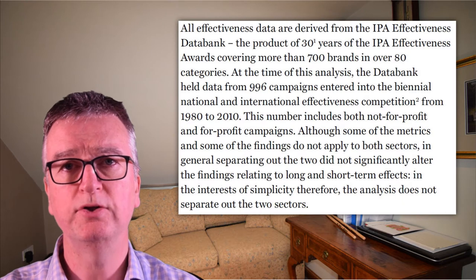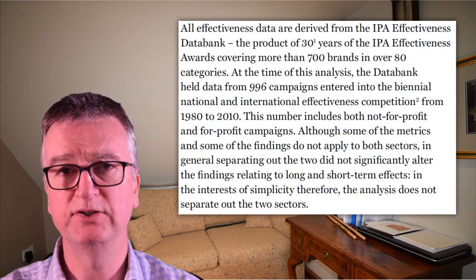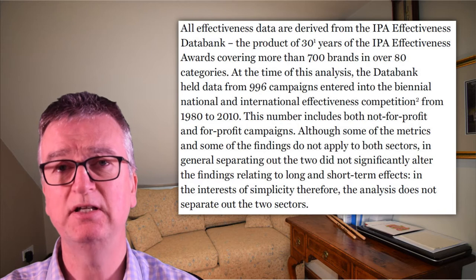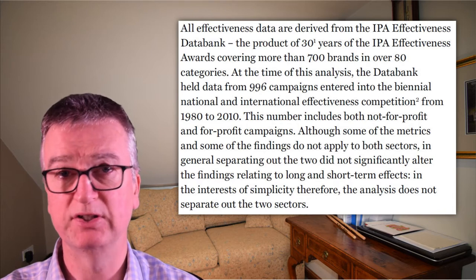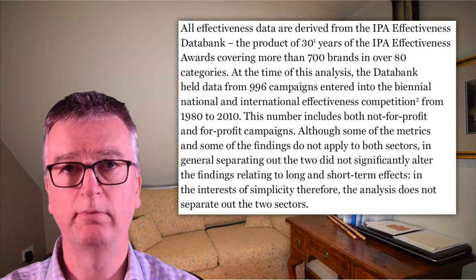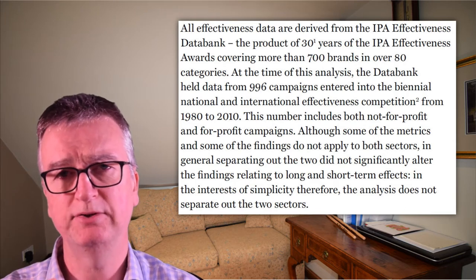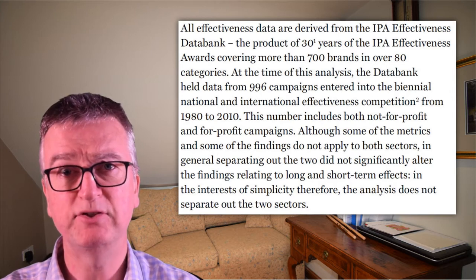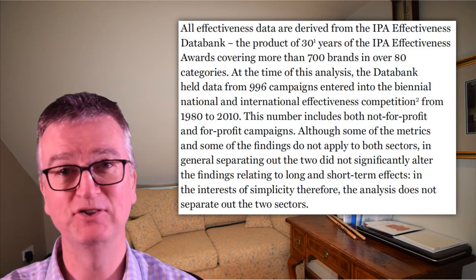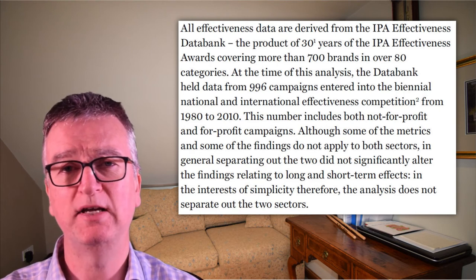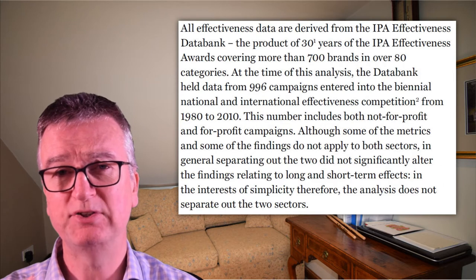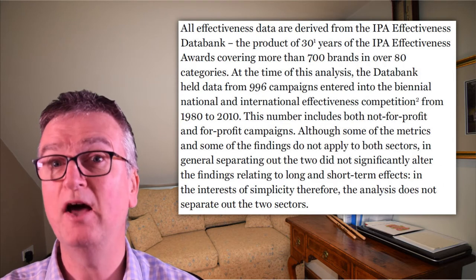First of all, the dataset itself. The Long and the Short of It is based on 996 entries into the IPA's competition for best advertising between 1980 and 2010. 996 does sound like a big number, but over 30 years it's actually only about 30 entries per year. More importantly, it's based on competition entries — it'll inevitably be biased against campaigns that didn't work. Agencies and their clients don't enter failed campaigns into competitions. Consequently, charts that say X percent of campaigns worked should actually say X percent of the successful campaigns that we know about worked.